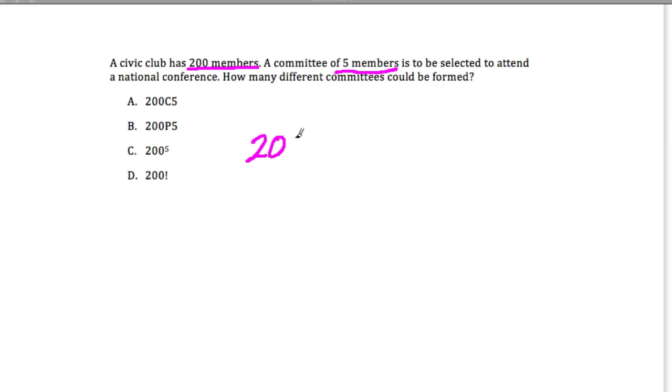So really here, we don't have to even solve it, but it's 200 people, and you're choosing five of them. And so the answer is A.